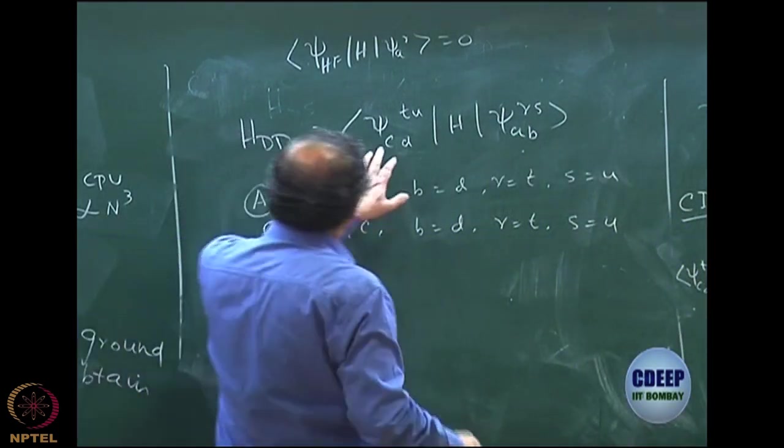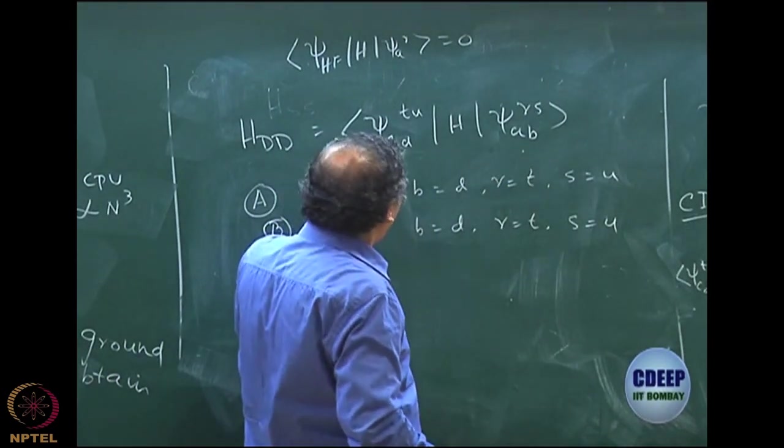Of course, if you have two occupancy difference, rule C, but then there are many integrals which will be zero.